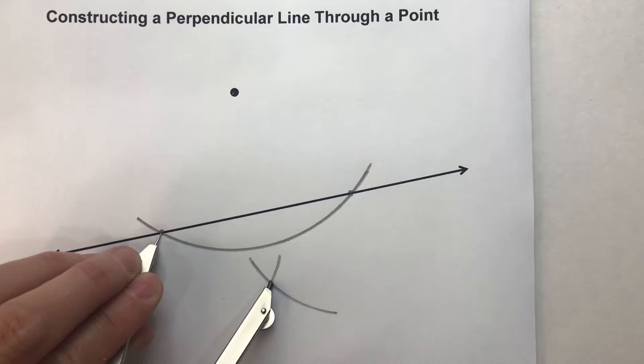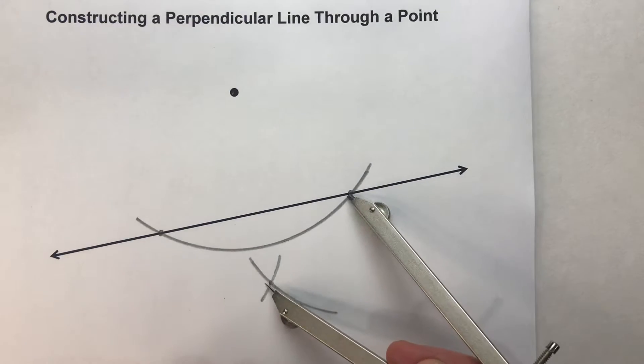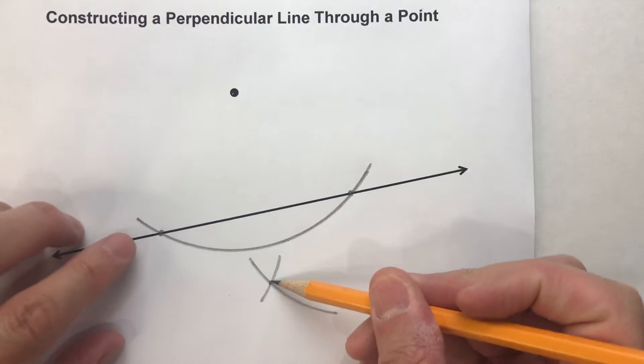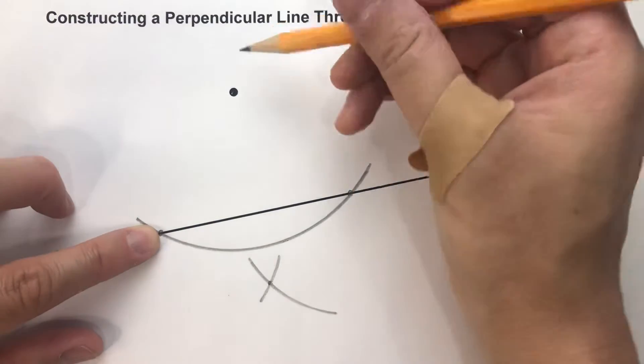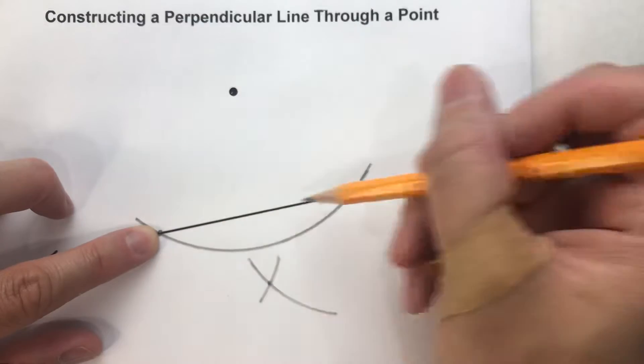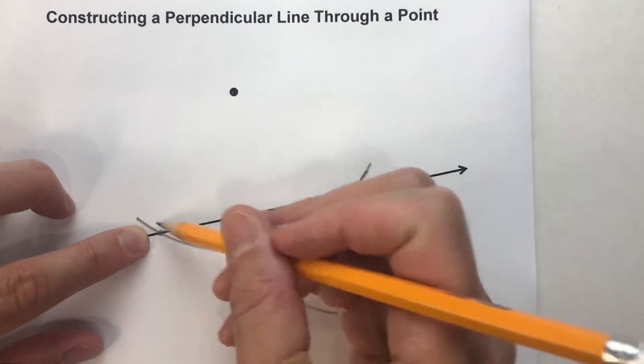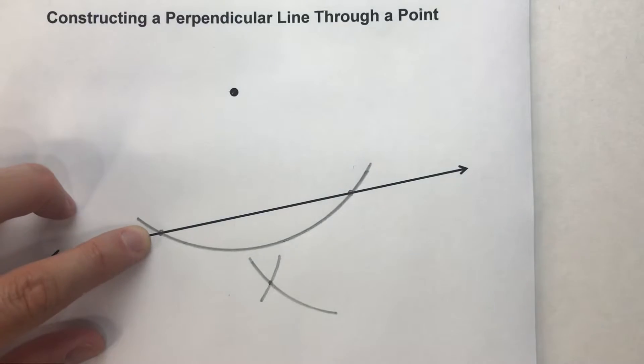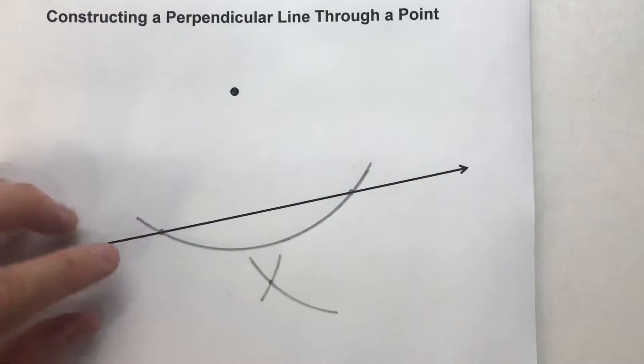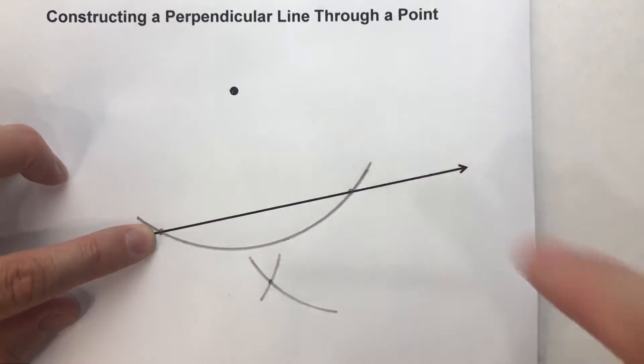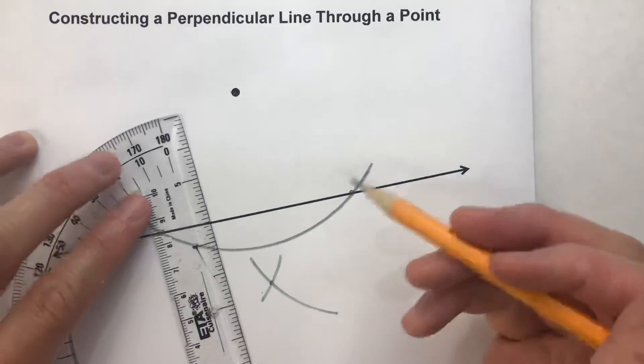That point is equidistant from this point here and this point here. This distance is the same as this distance. So that means this point is on the perpendicular bisector of this segment. And we already know these points are equidistant from this point because that's where I swung my arc from. So both of these points are on the perpendicular bisector of the segment from here to here.